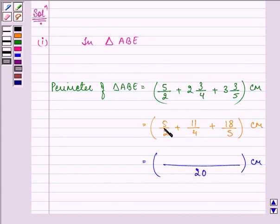So we have 5 by 2 multiplied by 10, the numerator and the denominator and in the numerator we have 50 plus it will get multiplied by 5, so we have plus 55 plus we have 18 into 4 that is 72.